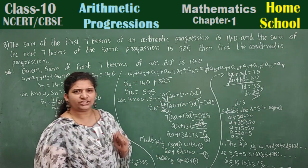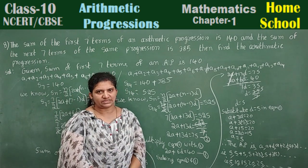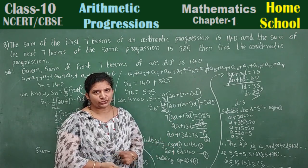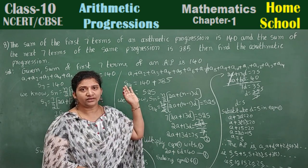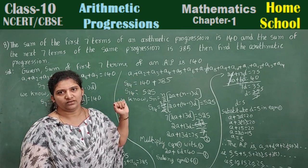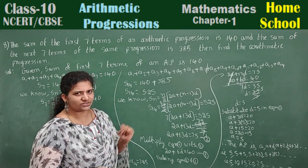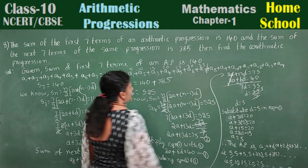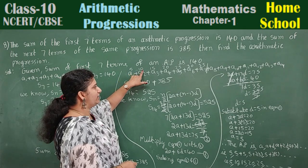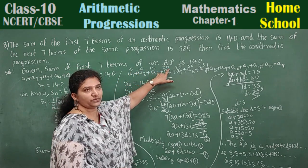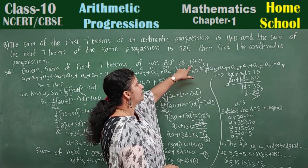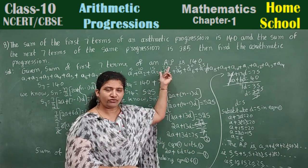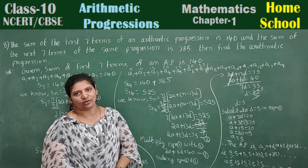When they ask you to find the arithmetic progression, you can write minimum 4 to 5 terms and put 'so on'. Let us verify: the first 7 terms are 5, 10, 15, 20, 25, 30, 35. Adding them: 5 plus 10 is 15, plus 15 is 30, plus 20 is 50, plus 25 is 75, plus 30 is 105... wait — the total comes to 140. Yes! Our values of a and d are correct, as the sum of the first 7 terms equals 140.